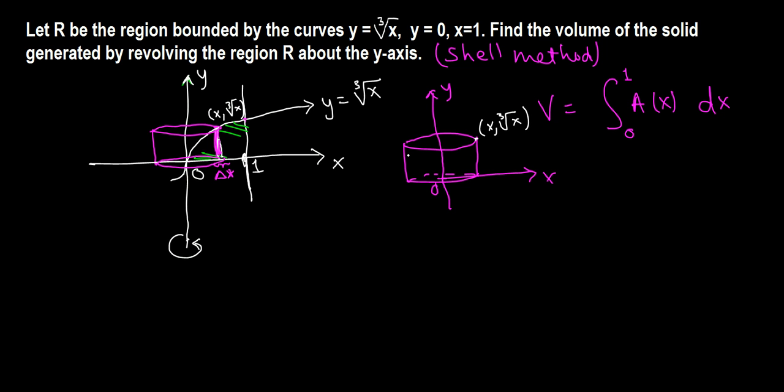Now we want to find the surface area and integrate from 0 to 1. The surface area is given by 2πrh, where the radius is x.